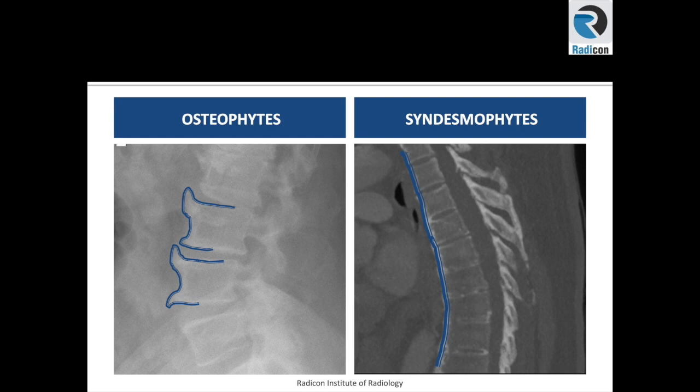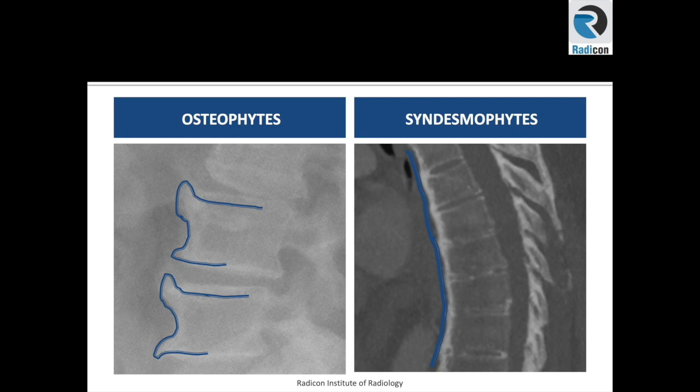Let's look at them closely. Osteophytes are irregular and fat, while syndesmophytes are regular, sharp, and vertically oriented. Because syndesmophytes are inflammatory in origin, they cause subligamentous spread beneath the anterior spinal ligament, causing inflammation and subsequent calcification, resulting in squaring of the vertebral body — a phenomenon not seen in osteophyte formation.